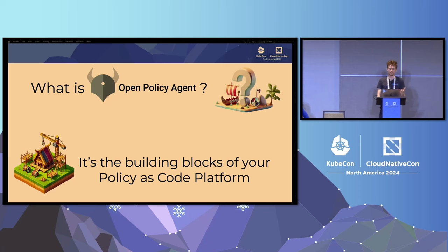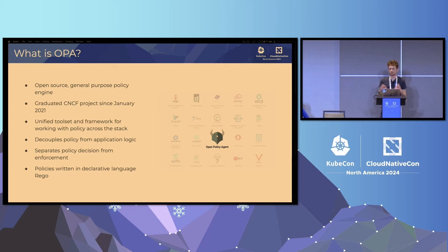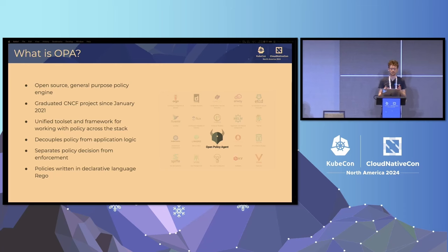So what's Open Policy Agent? Open Policy Agent is the building blocks of a policy as code platform. It's an open source general purpose policy engine, a graduated CNCF project, and a toolset for building policy as code across the stack. The core use case is to help you decouple policy decision making, the policy lifecycle management — updating your policies and auditing the decisions — and abstract that from the policy enforcement points like your applications, in order to have a standardized way to do policy evaluation.